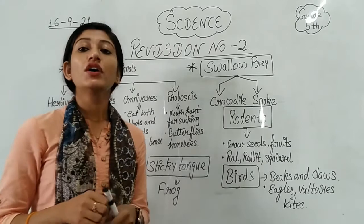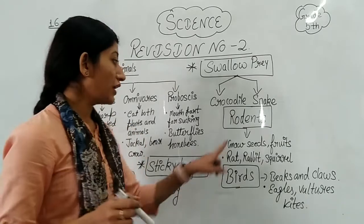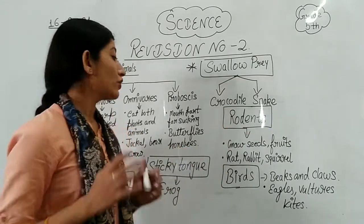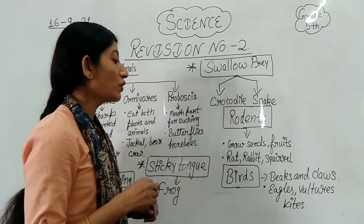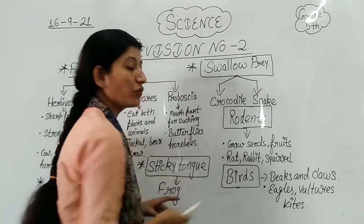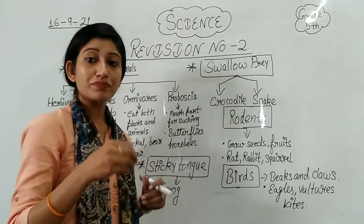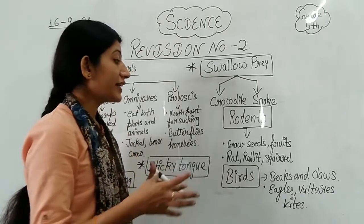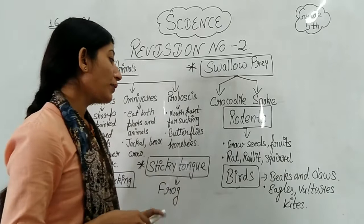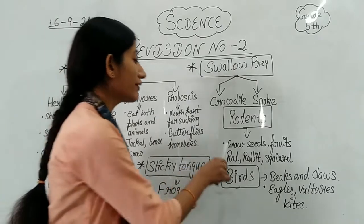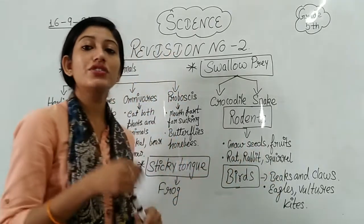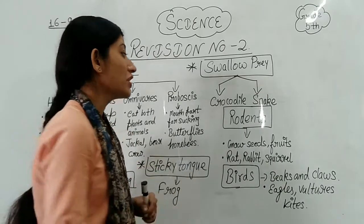Then we have some rodents. Rodents are animals that have the habit of eating seeds and fruits. Examples of rodents are rats, rabbits, and squirrels — they just eat seeds and fruits.